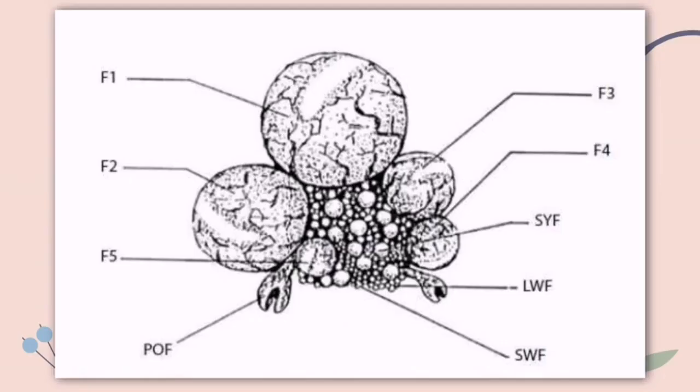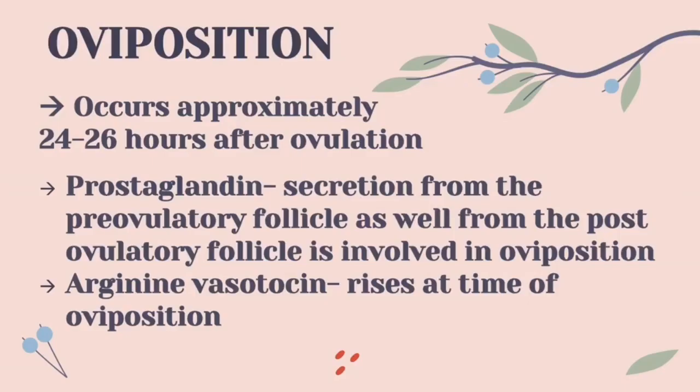This figure here is the ovary of a hen. The pre-ovulatory follicles of the hierarchy are identified according to size, with the F1 follicle being the largest follicle, followed by F2 as the second largest, and so on. After ovulation, oviposition occurs approximately after 24-26 hours. Prostaglandin secretion from the pre-ovulatory follicle as well as from the post-ovulatory follicle is involved in oviposition. The arginine vasotocin hormone rises at the time of oviposition.